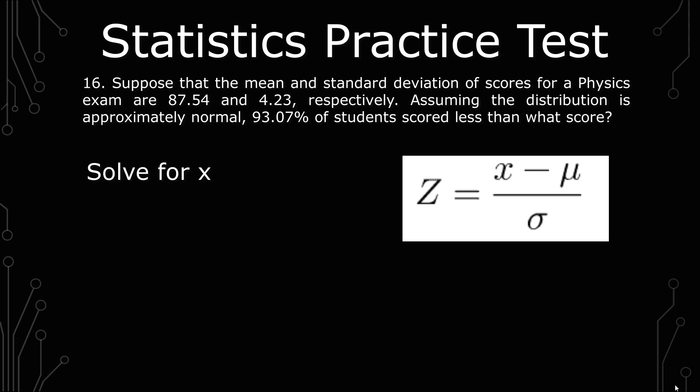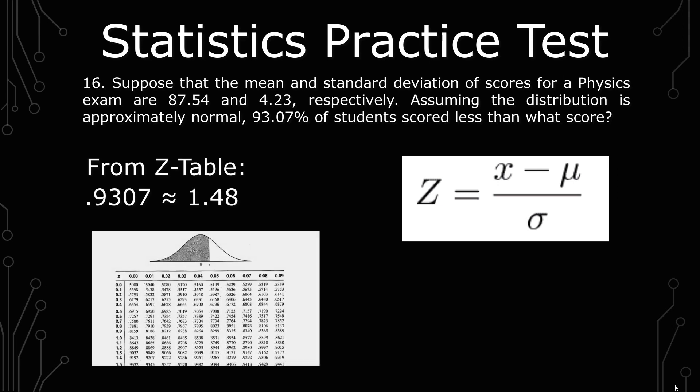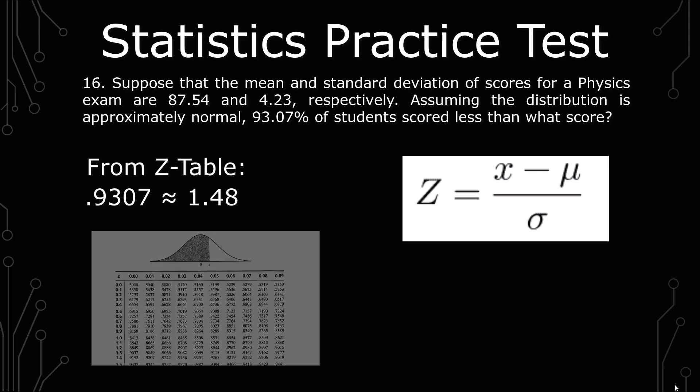So I'm going to be using a z-table to calculate what the z-score is. When you look for 0.9307 in the z-table, you find 1.48 is the closest.